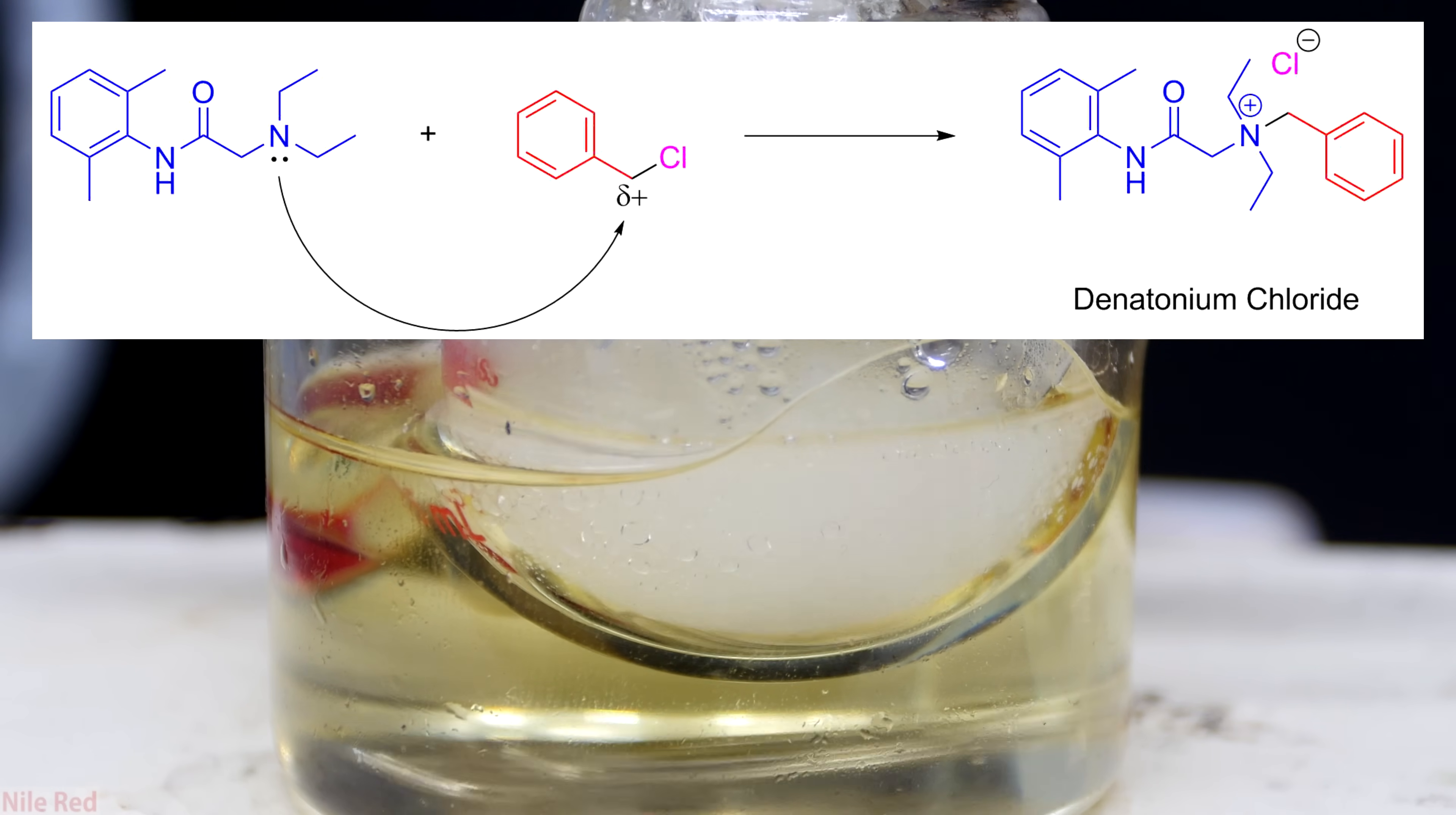At some point though, the chlorine is popped off and it serves to act as the counterion for the positive nitrogen. The reason why this type of reaction is called the substitution is because we substituted the chlorine with something else.